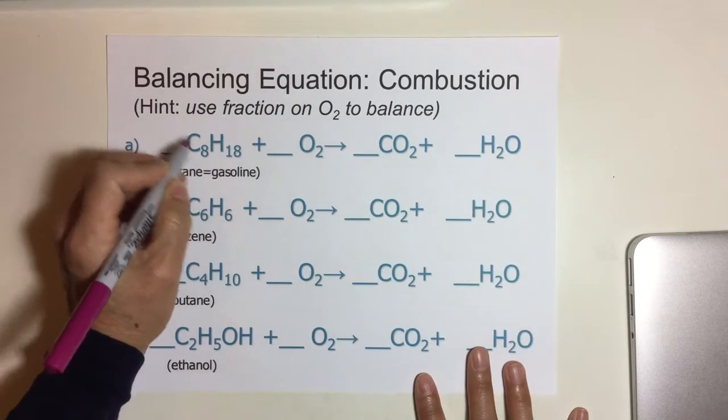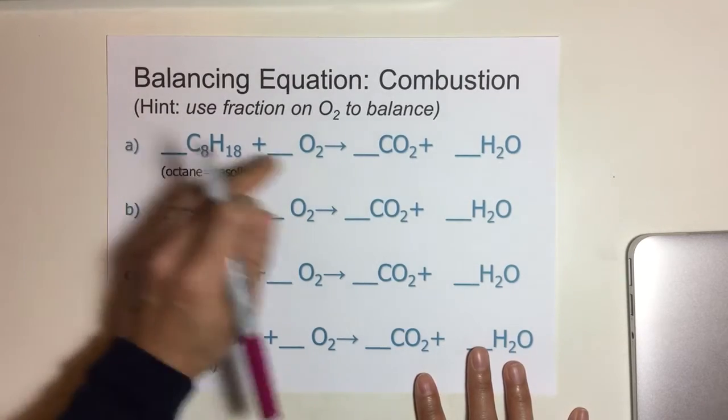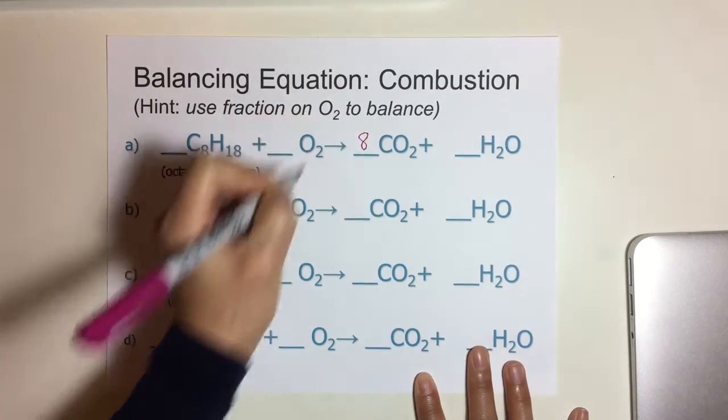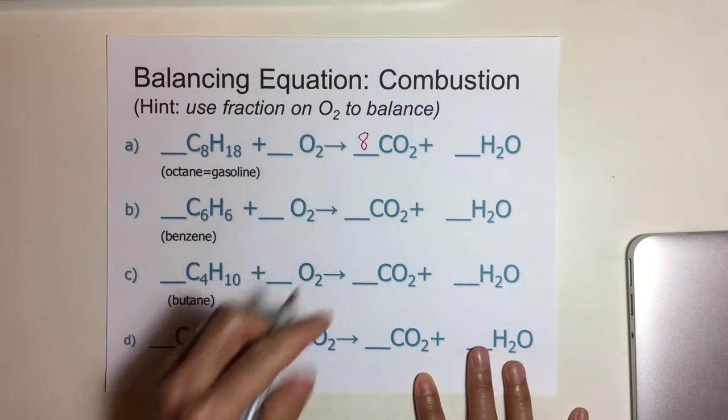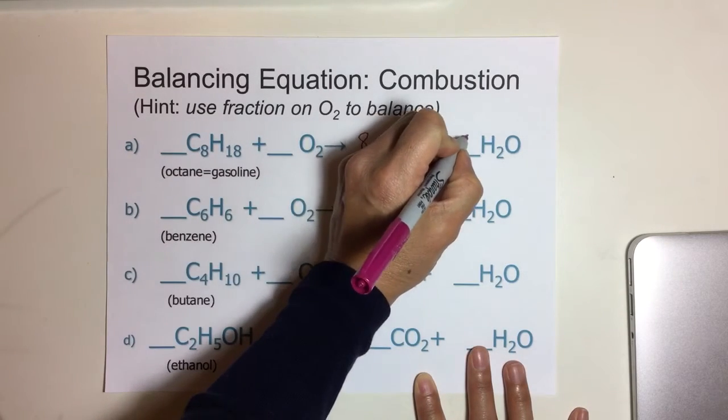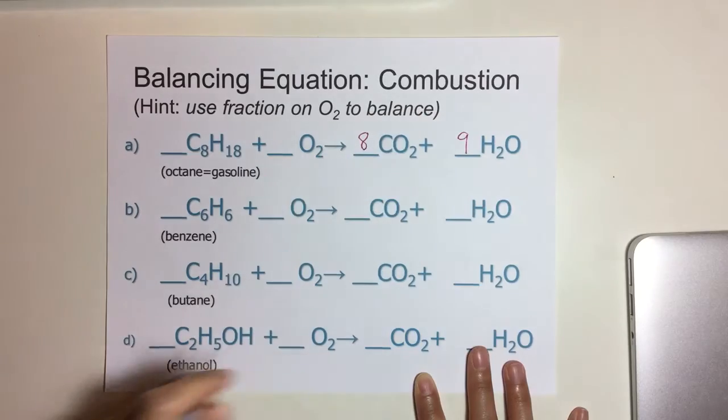I see carbon listed first and there's eight of them, so I go over to this side and I put an eight coefficient. Then I count the hydrogens. There's 18 hydrogens, so I want nine in front of here to make 18 hydrogens.